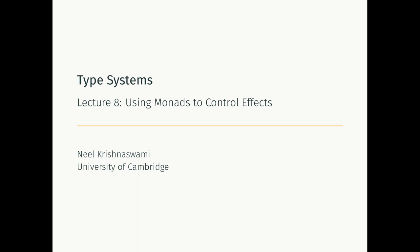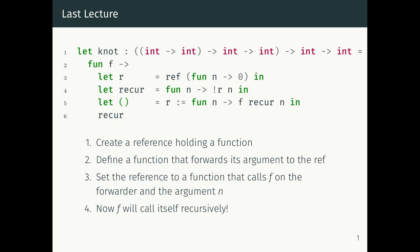In the previous lecture, what we found was that it was possible to write programs which go into infinite loops just as soon as you add state to the simply typed lambda calculus. What we've got on this slide is this function called Landin's Knot, which implements recursion by backpatching.